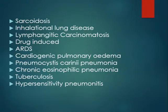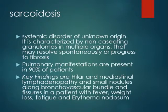First we are going to start with sarcoidosis. Sarcoidosis is a systemic disorder of unknown etiology, characterized by non-caseating granulomas in multiple organs. So it's like TB — there are granulomas. However, in TB there are caseating granulomas; here there are non-caseating granulomas. It may remit spontaneously or progress to fibrosis. The pulmonary manifestations are present in up to 90% of patients, so chest X-rays and HRCT are of extreme importance in this disease.